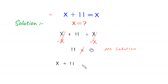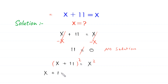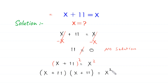We have the equation x plus 11 is equal to x, and we take the square of both sides. So x plus 11, whole squared, is equal to x plus 11 times x plus 11, which equals x squared.